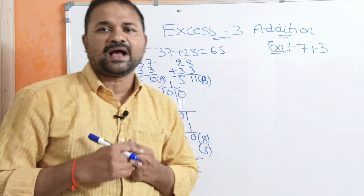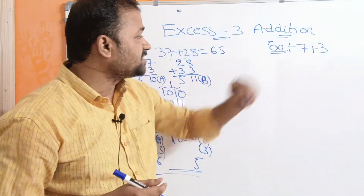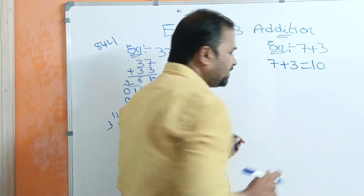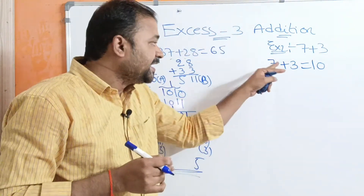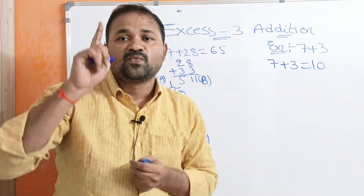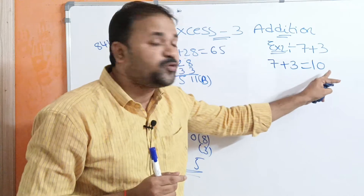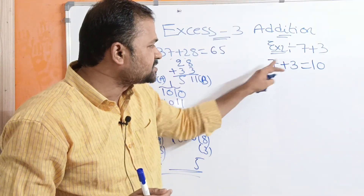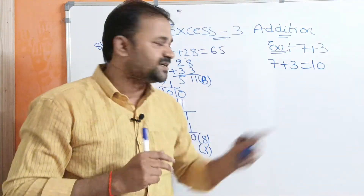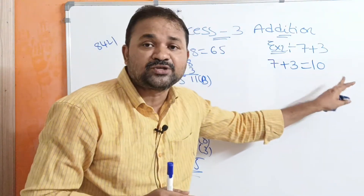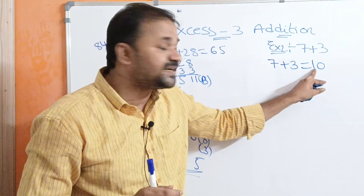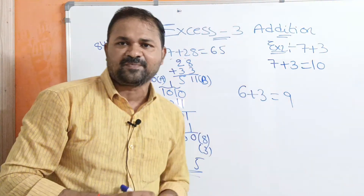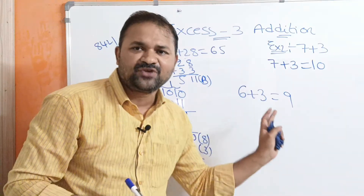Now let us solve the second example: XS3 addition of 7 and 3. If we add 7 and 3, the result is 10. An important point: if the input number contains only a single digit, the output should also contain a single digit. But here 7 plus 3 gives 10, which has two digits. Compare with 6 plus 3 equals 9, where all numbers have one digit — that is proper format.